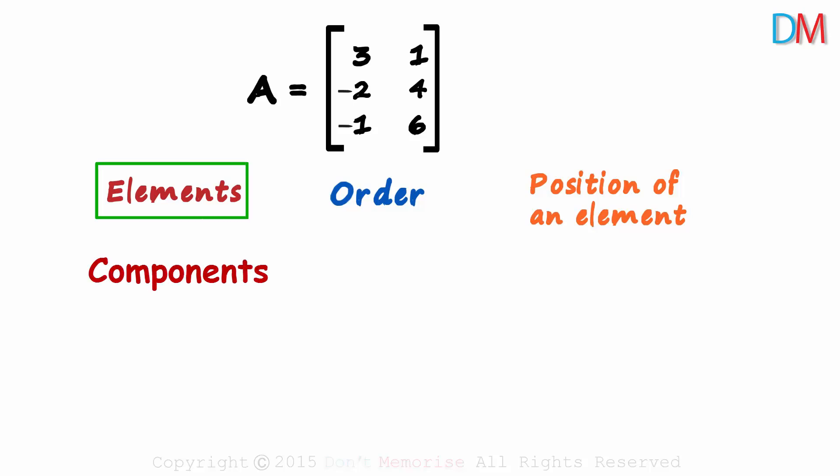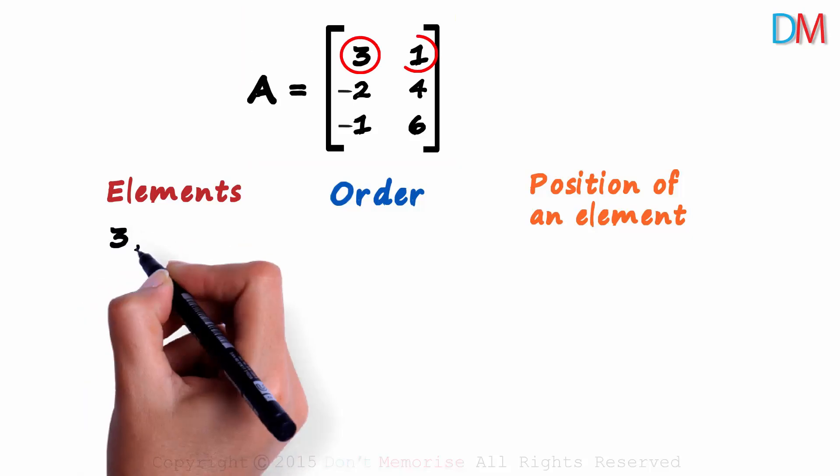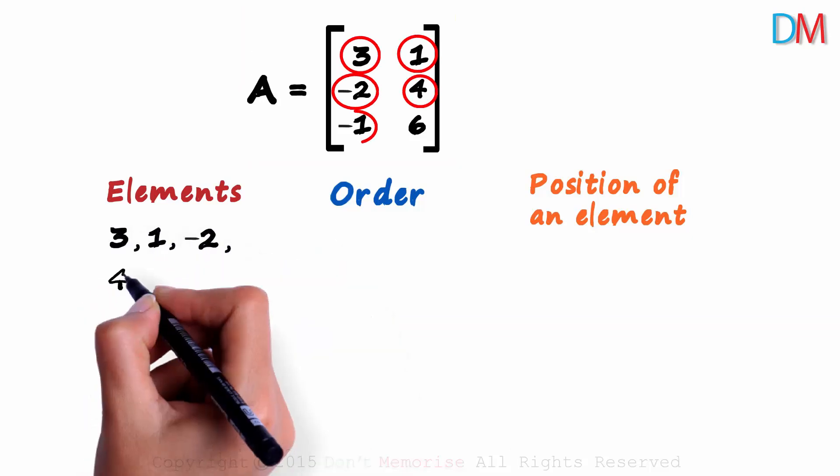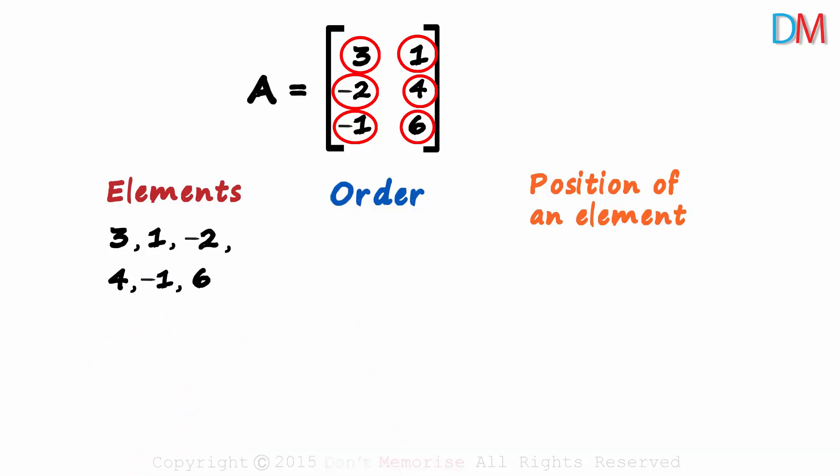Elements are nothing but the components of the matrix. This matrix A has six elements: three, one, minus two, four, minus one, and six. Six elements in this matrix. And the elements of a matrix don't have to be numbers. They could also be letters or random characters. So the elements arranged in rows and columns make up a matrix.